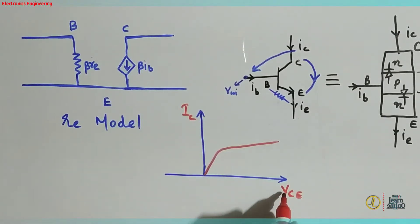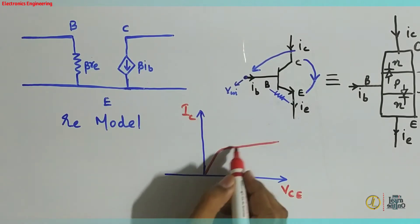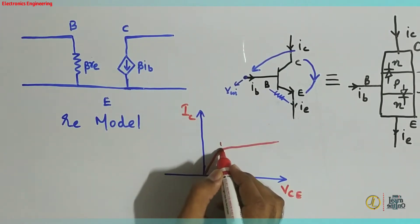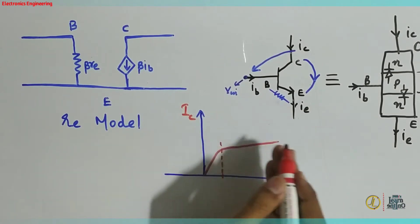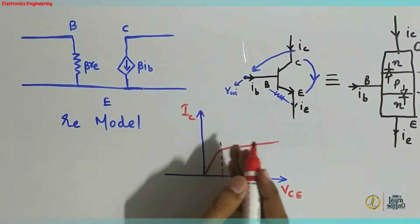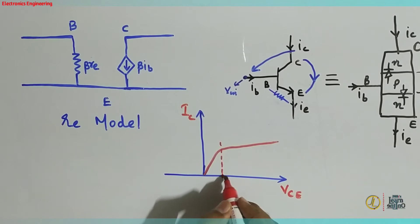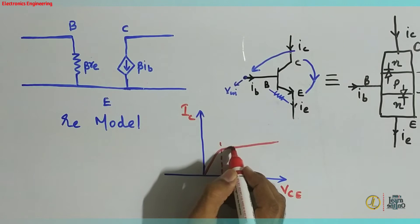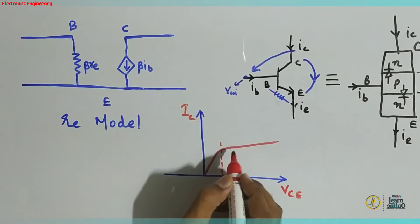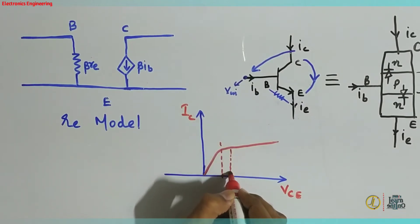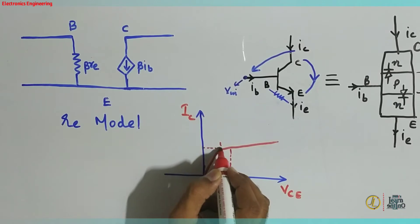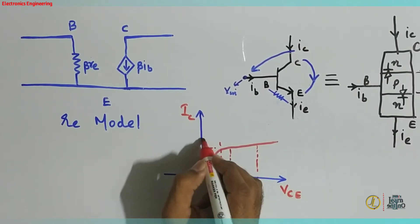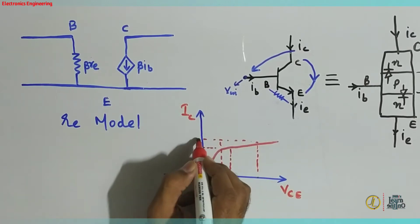That's the output voltage. We can go to the output current. We can go to the active region — the amplifier region to work in. If you look at this, output voltage is on the output, and the output current is on. Output voltage is on the same power because it is on the same level. Output voltage and the corresponding output current are on the same power.